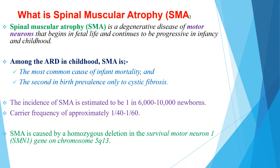Spinal Muscular Atrophy is caused by a homozygous deletion in the survival motor neuron gene, which is found on chromosome 5.